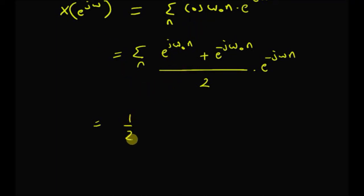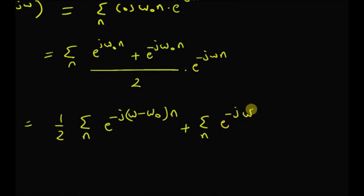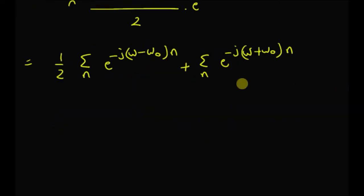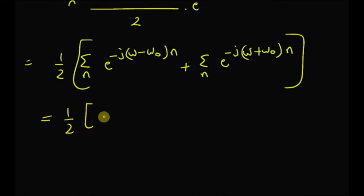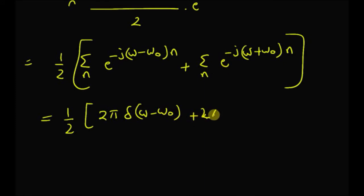The DTFT becomes (1/2) times the summation of e^(−j(ω−ω₀)n) plus another summation of e^(−j(ω+ω₀)n). The first sum is the product of e^(jω₀n) with e^(−jωn), and the second is the product of e^(−jω₀n) with e^(−jωn). This equals (1/2) times 2π·δ(ω−ω₀) plus 2π·δ(ω+ω₀), since each summation is the DTFT of 1 evaluated at the respective shifted frequency.